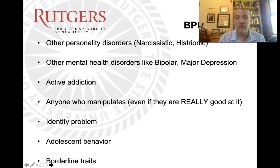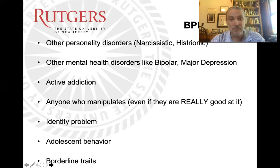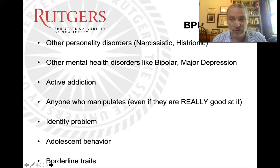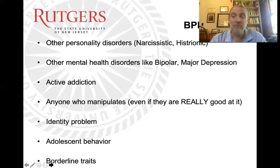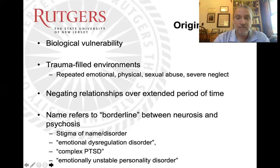Personality disorders are difficult to diagnose because they look like a lot of other things, including each other. They resemble bipolar disorder, major depression, and types of addiction. Just because somebody is manipulative doesn't mean they have borderline personality disorder — a person with BPD is like that all the time; they don't turn it on and off. In a way, it's not adolescent behavior, but very often it resembles adolescent behavior — you might think you're looking at somebody acting like a teenager decades later.